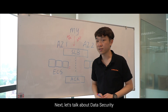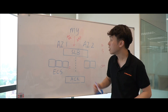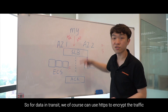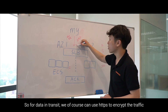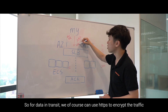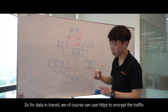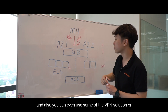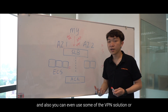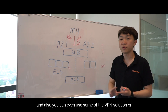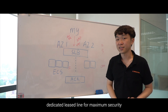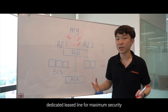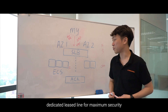Next, let's talk about data security. For data in transit, we can use HTTPS to encrypt the traffic, and you can also use VPN solutions or a dedicated leased line for maximum security.